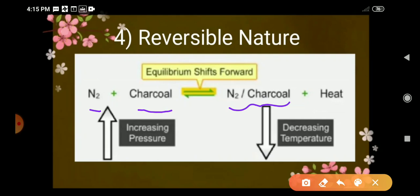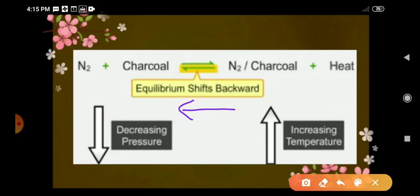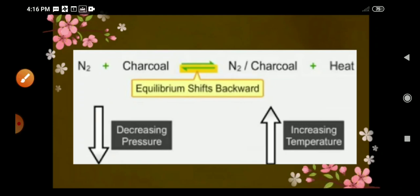An equilibrium stage is developed. When we increase the pressure — as we learned in the equilibrium chapter — the equilibrium shifts in the forward direction, meaning adsorption increases. When we decrease the pressure, the equilibrium shifts in the backward direction, meaning desorption takes place. So increasing pressure increases adsorption, and decreasing pressure decreases adsorption. This shows that the process can move in both directions, meaning physical adsorption is reversible in nature.